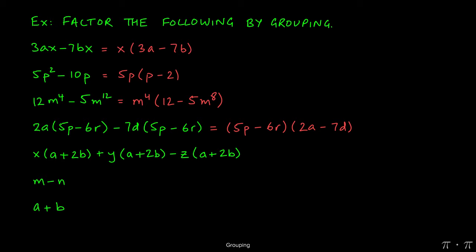For the next example, we see x times a plus 2b plus y times the same quantity minus z times the same quantity. So here, hopefully you're able to see that a plus 2b, the quantity that keeps repeating, is our GCF.